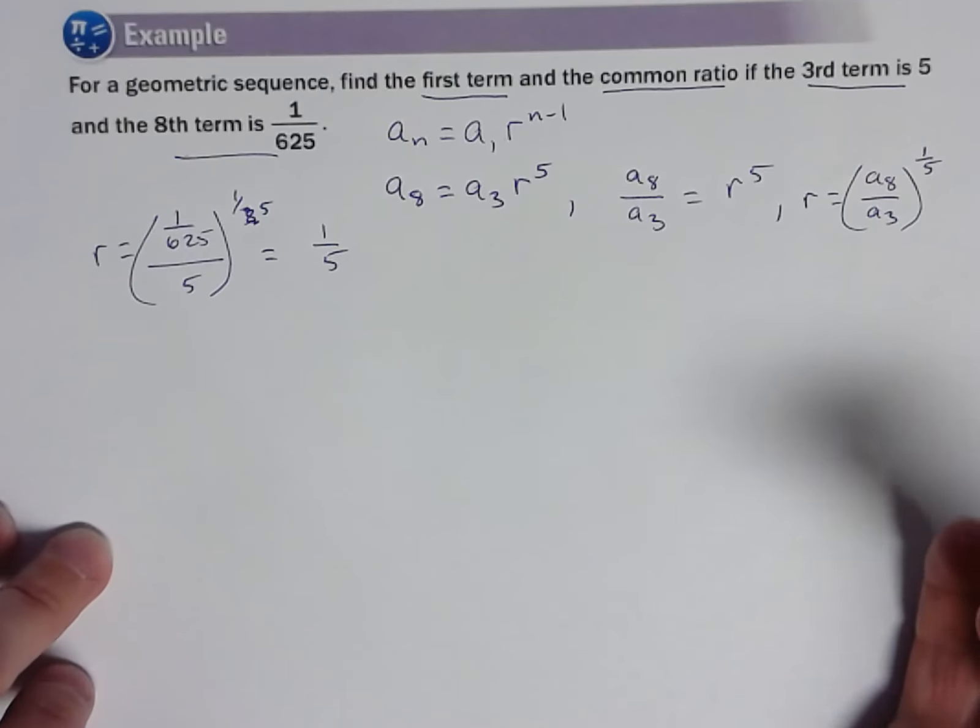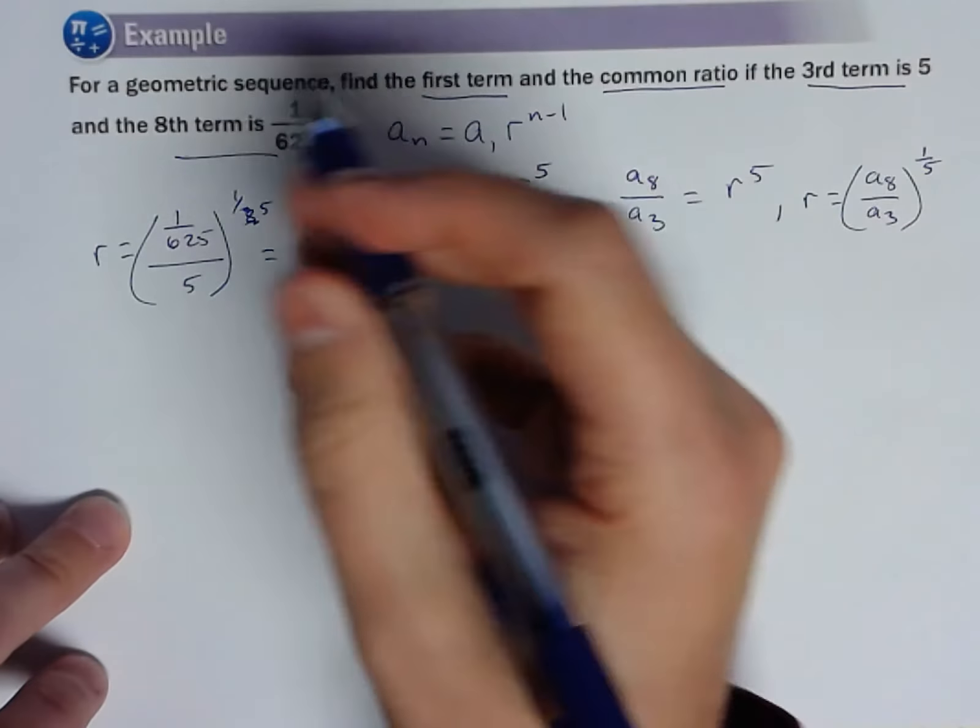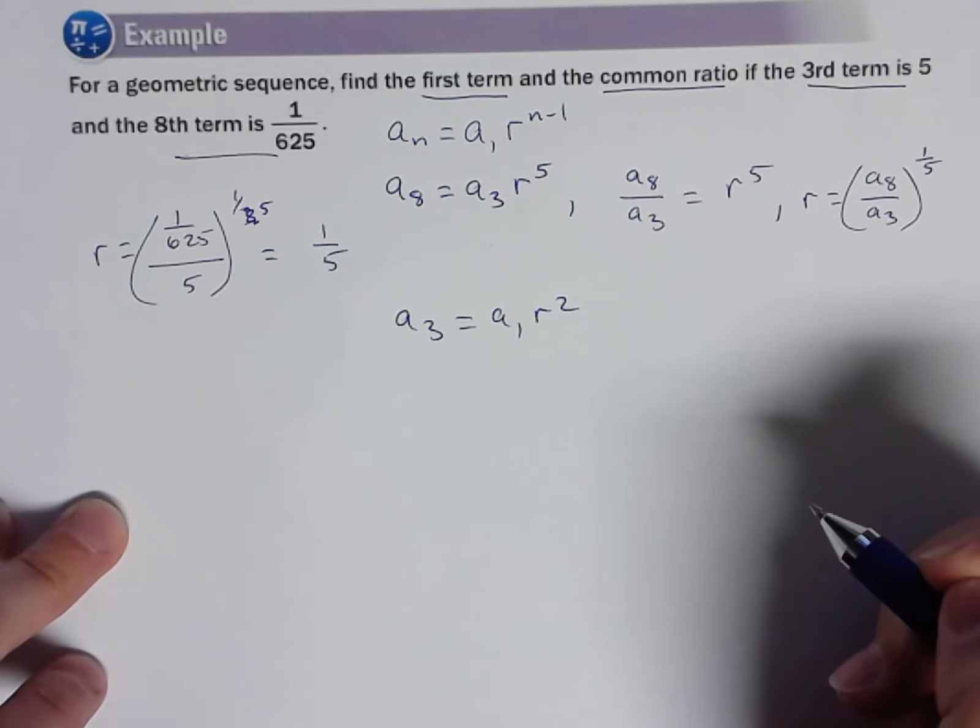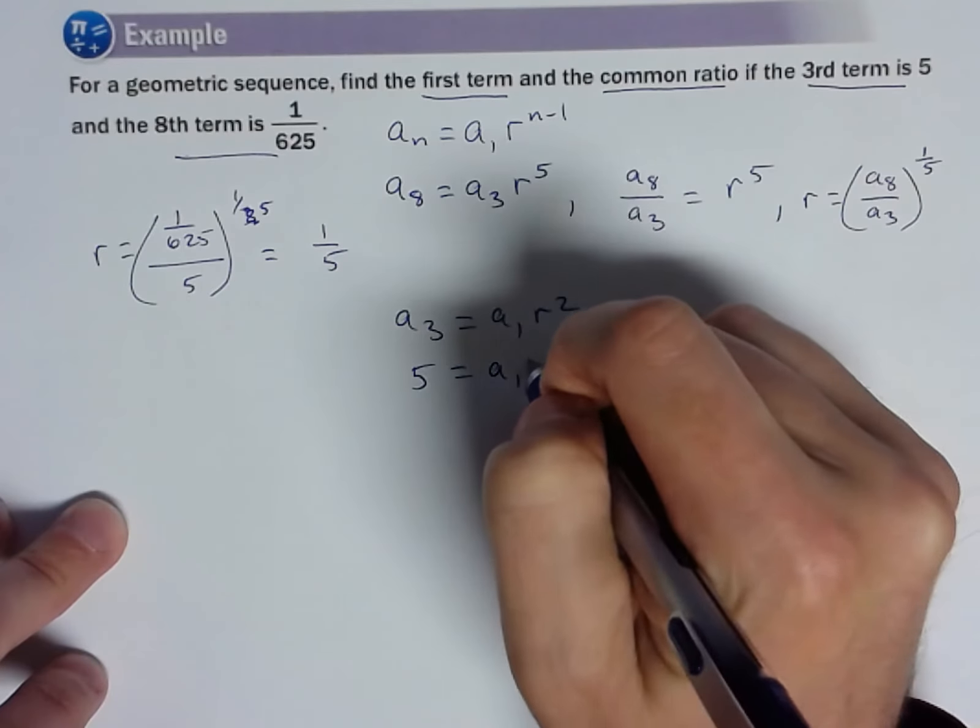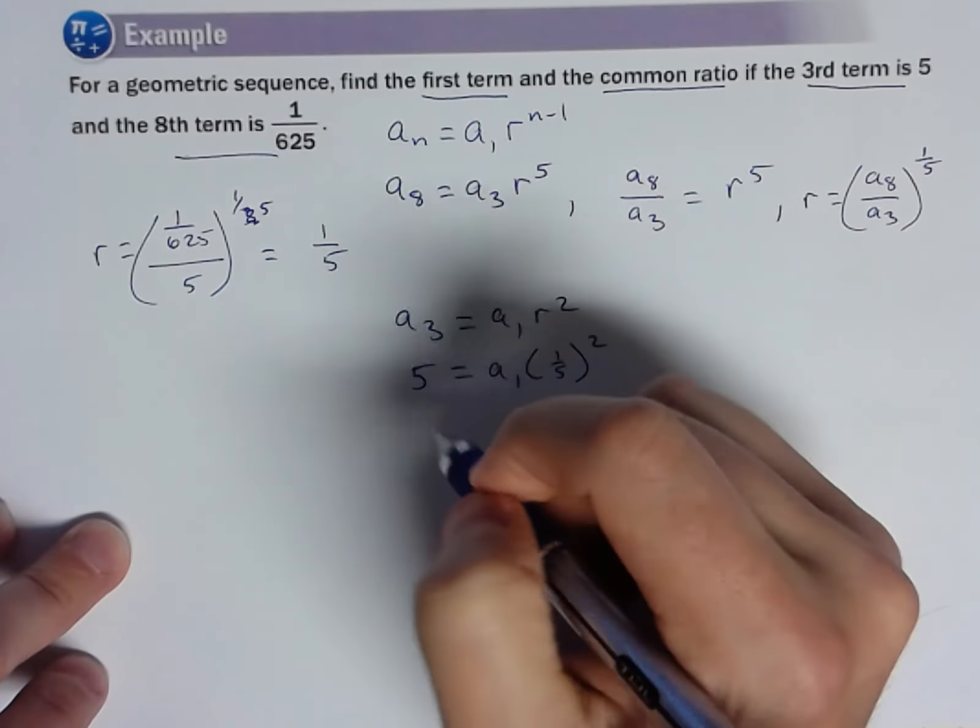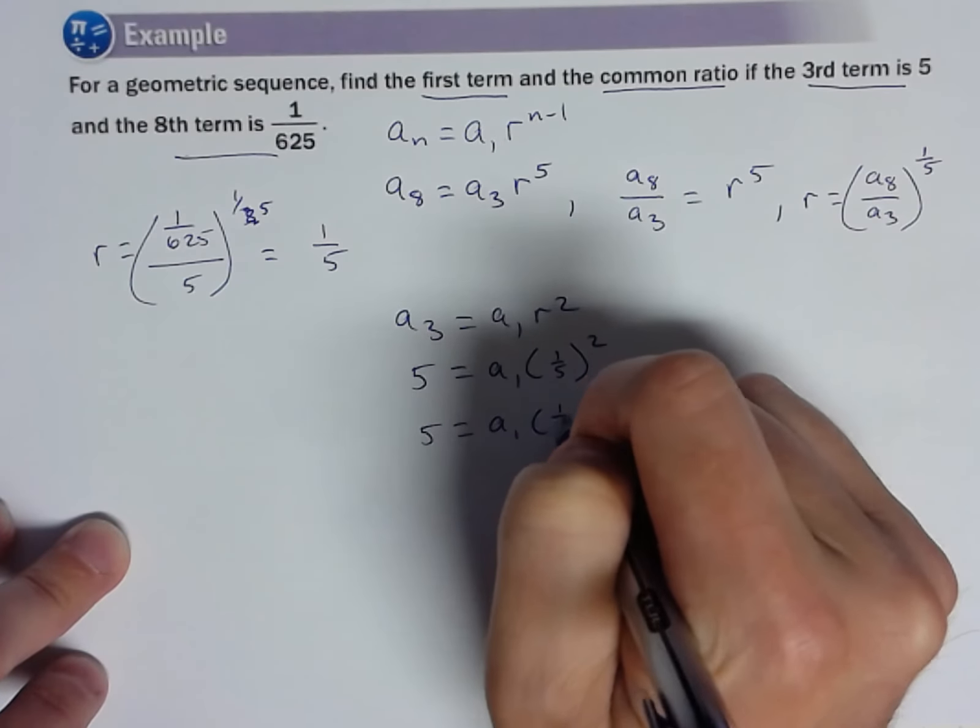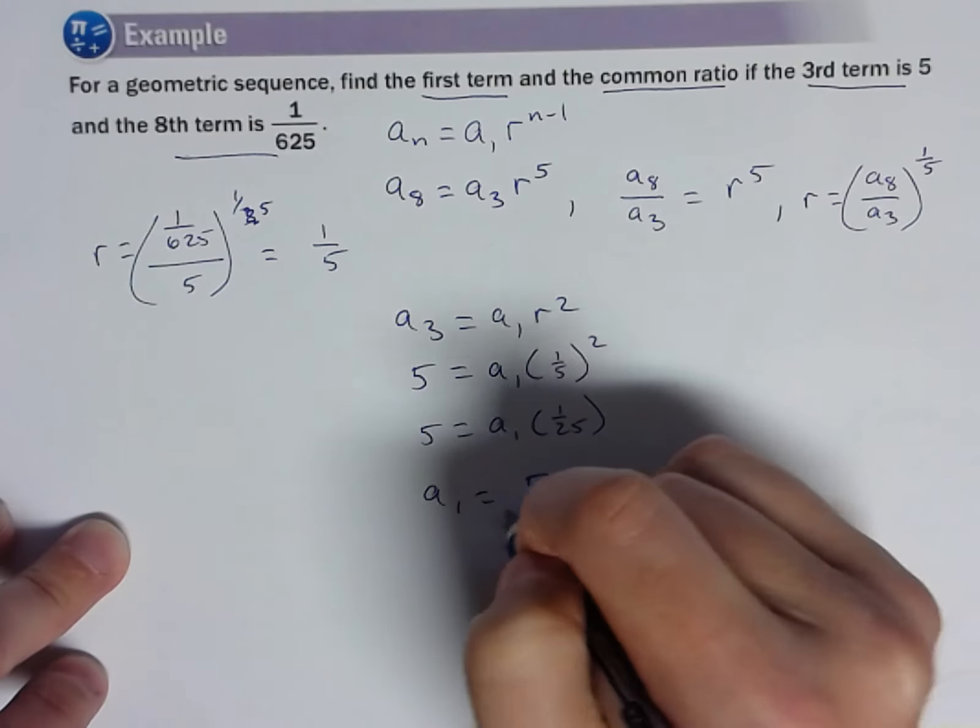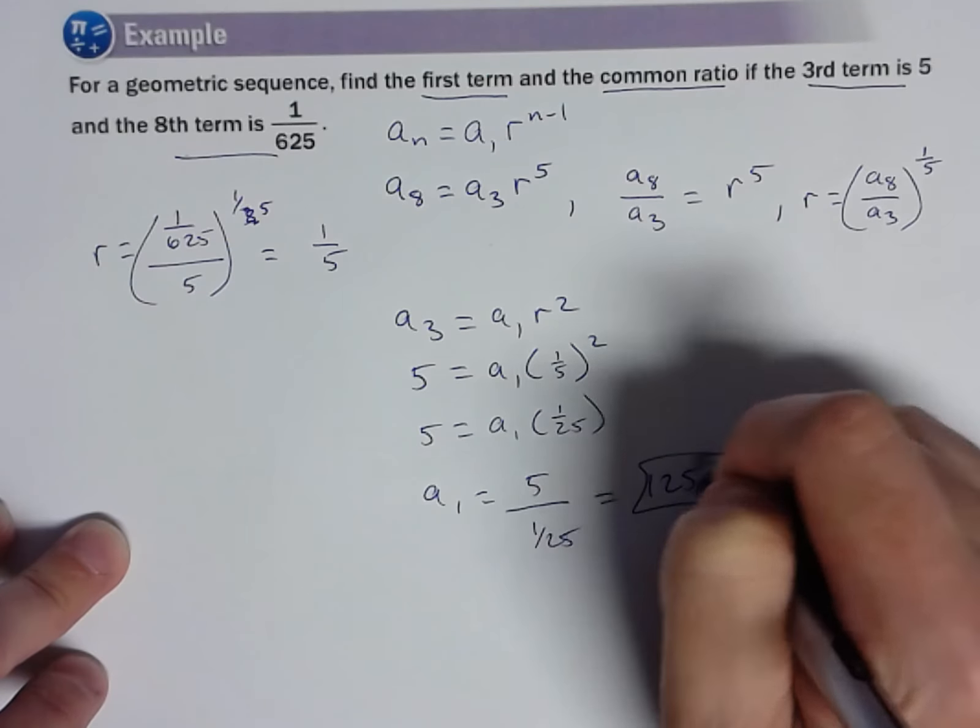Well, I'm still not done. I need to figure out the first term, but now I can relate these other things. So if the third term is five, the third term would be the first term times R squared, right? So let's plug things in. Five equals the first term times one-fifth squared. Now we just need to solve. So five equals the first term times one over 25. And the first term would equal five divided by one over 25, which would equal 125.